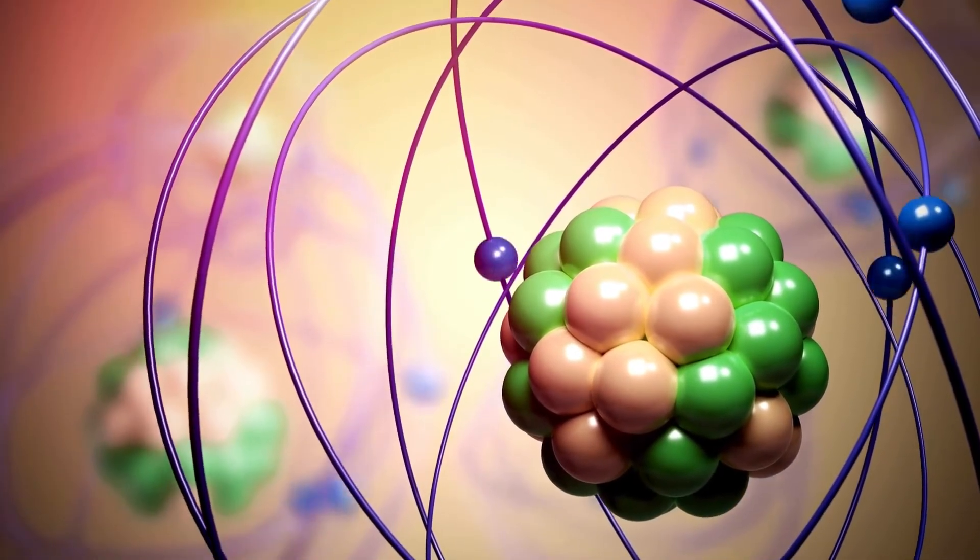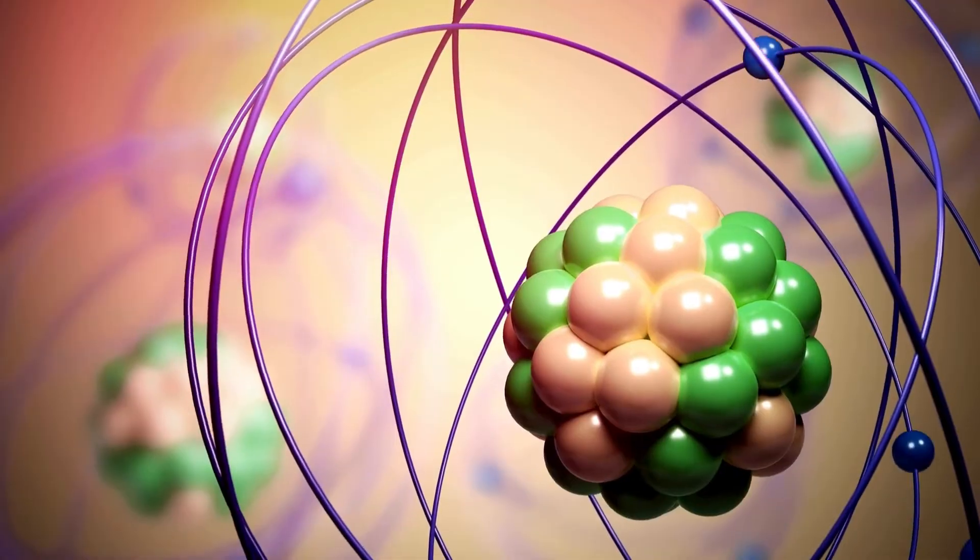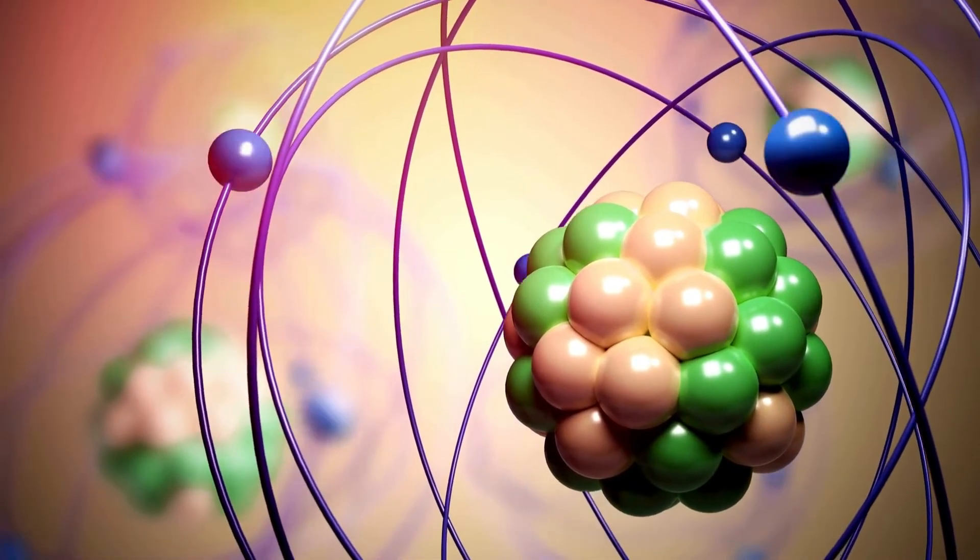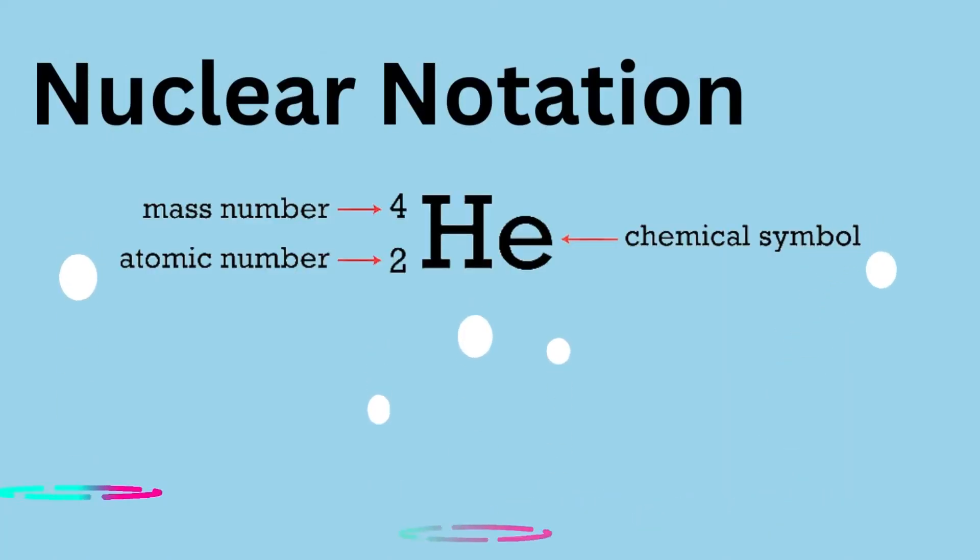Normally when we're talking about atoms, we're worried about the atomic number, but because isotopes are all about a change in mass, we are focused on the atomic mass. This is especially noted when writing nuclear notation. This type of notation includes writing the mass and atomic number next to the symbol. For example, helium has an atomic number of two and an atomic mass of four, so we would write it as 4 2 He.